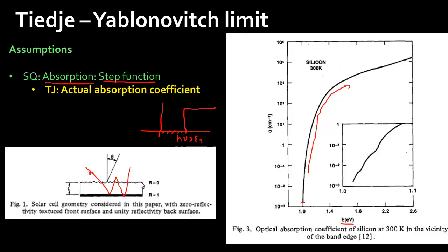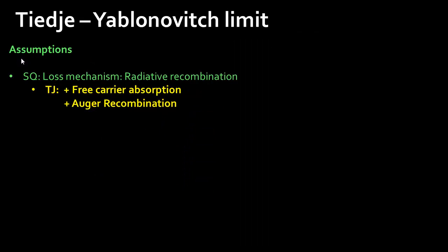They took this into account by assuming a textured surface, which is assumed to maximize light trapping — a topic worthy of another video. They assumed the front surface has a reflectivity of zero and the back surface has a reflectivity of one, so all light reaching the back surface is completely reflected. They also assumed the cell has a finite thickness, which you need to consider if some of the spectrum is escaping out.